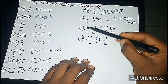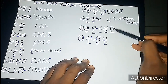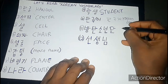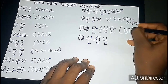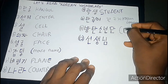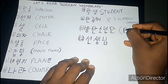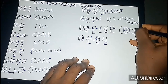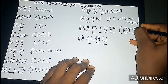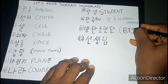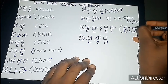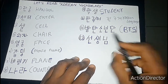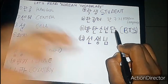Now this one is 방탄소년단 — Bangtan Sonyeondan. This is the full name of BTS, the South Korean boy group. It was too long, so they shortened it to BTS. So the full name is Bangtan Sonyeondan.